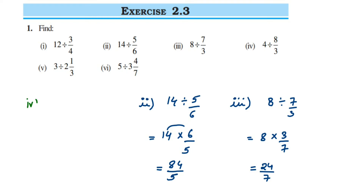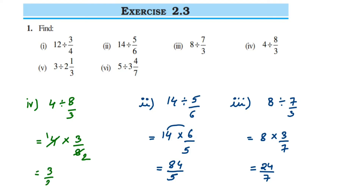Fourth: we have 4 divided by 8/3. Keep 4 as the first number, division becomes multiplication, take the reciprocal of 8/3 which is 3/8. Can we cancel? We can cancel directly in the 4 times table — 4 ones are 4 and 4 twos are 8 — so this equals 3/2.